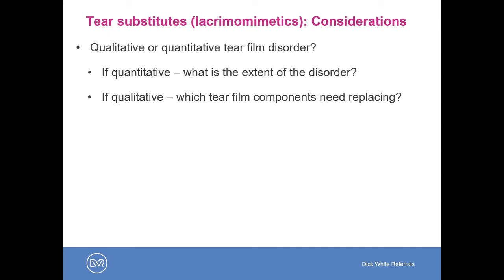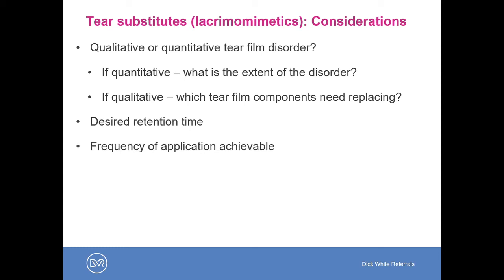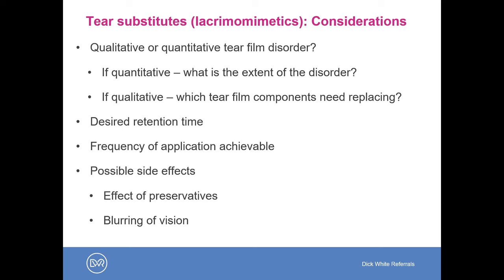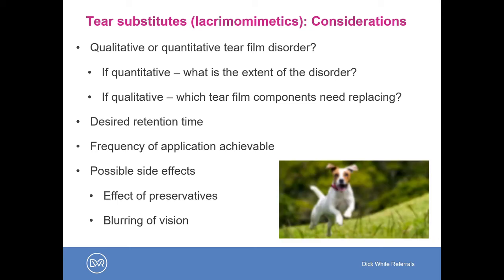For tear substitutes — lacrimimetics — we need to consider whether we're dealing with a qualitative or quantitative tear film disorder, the severity of the disorder, and what the owner can realistically manage. Pure aqueous tear substitutes require application every one to two hours, which very few owners can manage. Instead, we usually use a combined aqueous and mucinomimetic agent such as carbomer 980, also known as polyacrylic acid — the trade names in the UK being Viscotears and Lubrithal — which are useful for routine use in most cases of dry eye and should be applied around every four hours. For ointment-based preparations, there can be blurring of vision, which is commonly seen.